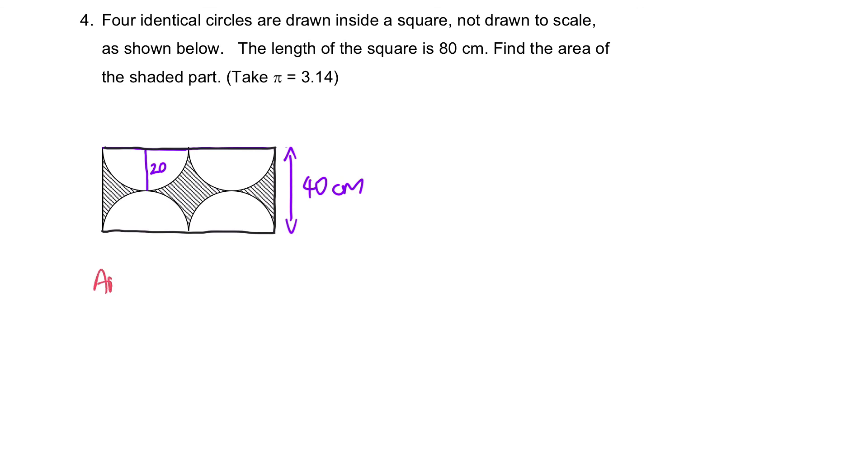Let's first find the area of the rectangle. The area of the rectangle is equal to the length. We know that the length is 80 cm from here to here. 80 times 40, which is 8 times 4 plus 2 zeros. So, it's 3200 square cm. Next.